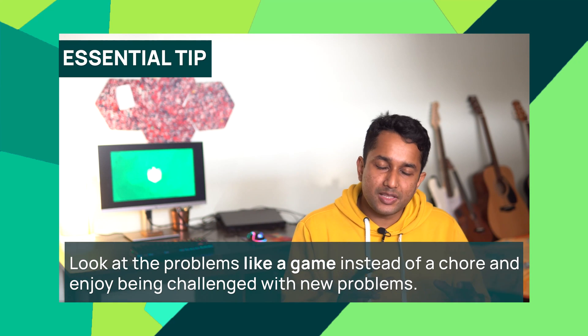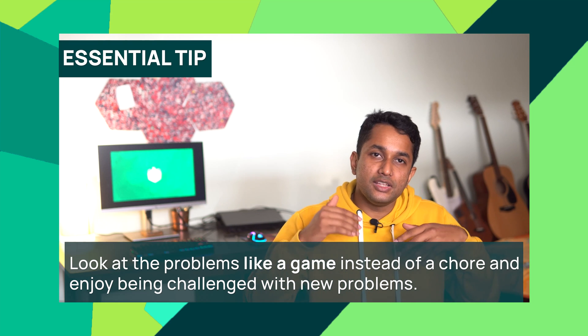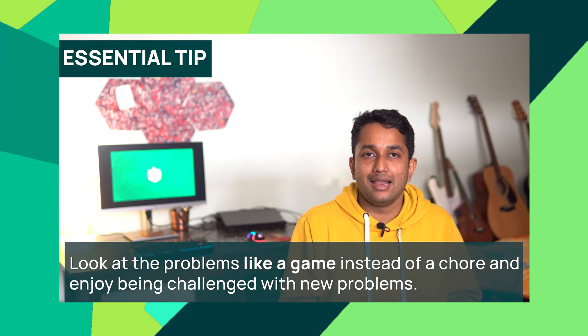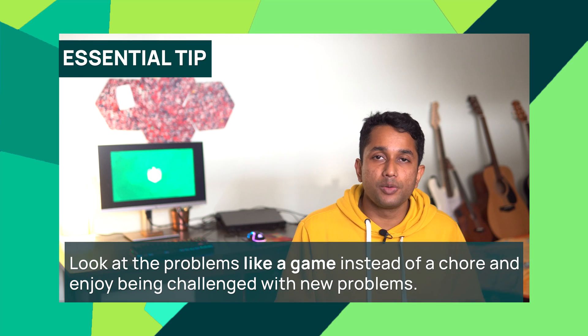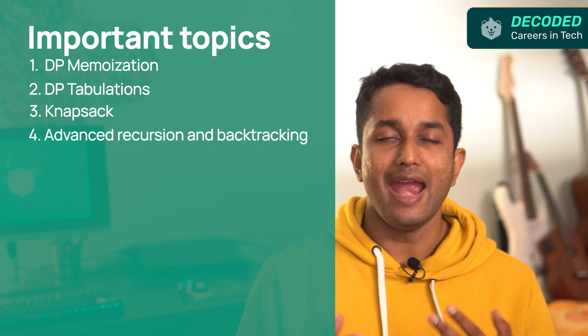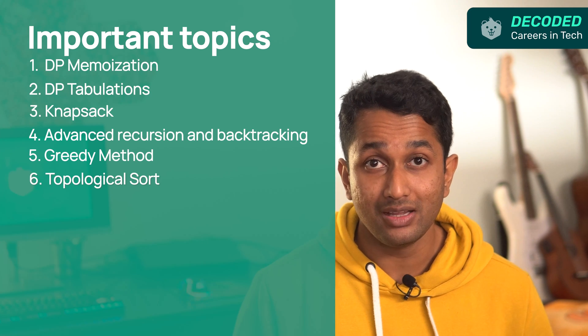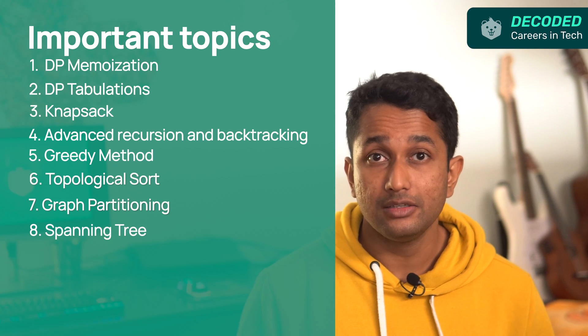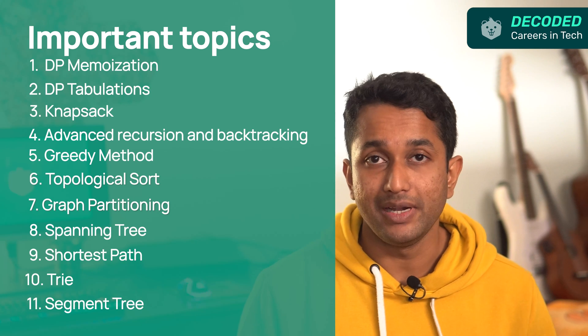One tip: look at the problem like a game, not like a chore. If you do this, you will start enjoying being challenged with new problems, and you'll be motivated to solve newer ones. The topics to cover in stage three are DP Memoization, DP Tabulation, Knapsack, Advanced Recursion and Backtracking, Greedy Method, Topological Sort, Graph Partitioning, Spanning Tree, Shortest Path Algorithm, Trie, and Segment Tree.